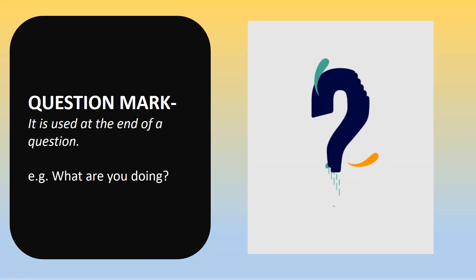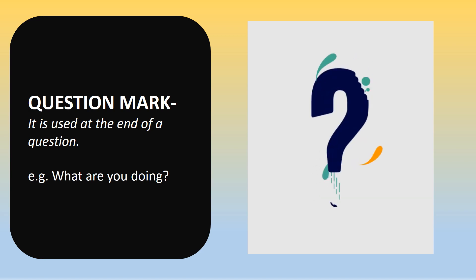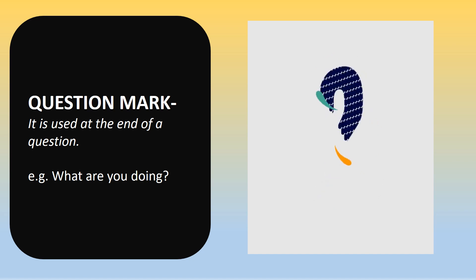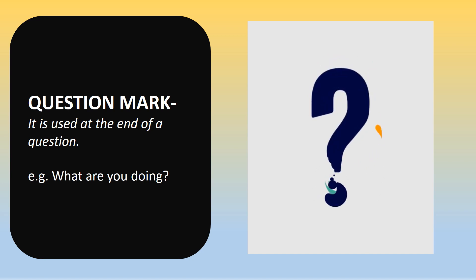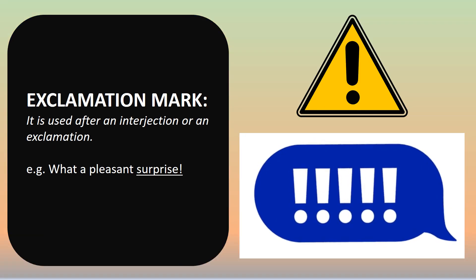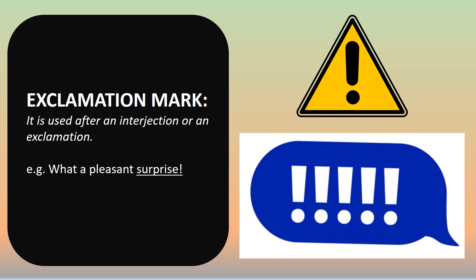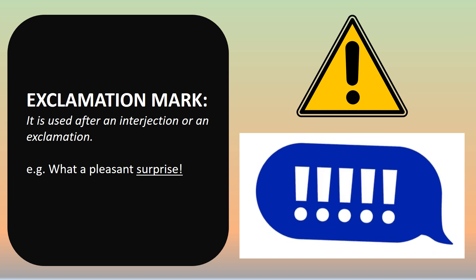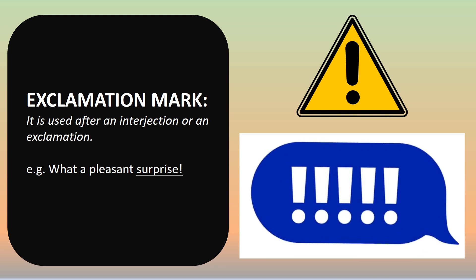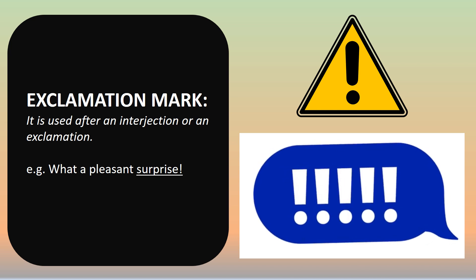Question mark: it is used at the end of an interrogative sentence, that is, a question. Example: 'What are you doing?' Exclamation mark: it is used after an interjection or an exclamatory sentence. Example: 'What a pleasant surprise!'